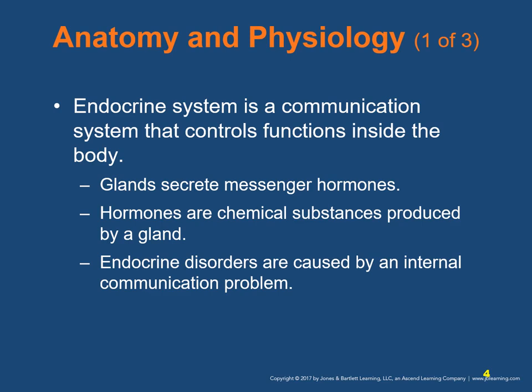If a gland is not functioning normally, it may produce more hormone than needed, which is hypersecretion, or not enough hormone, which is hyposecretion. A gland may also be functioning correctly, but the receiving organ may not be responding.